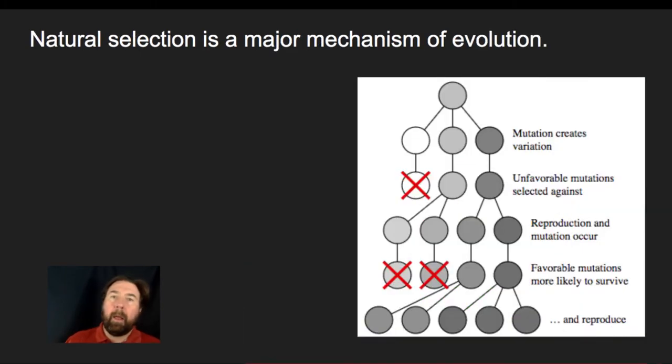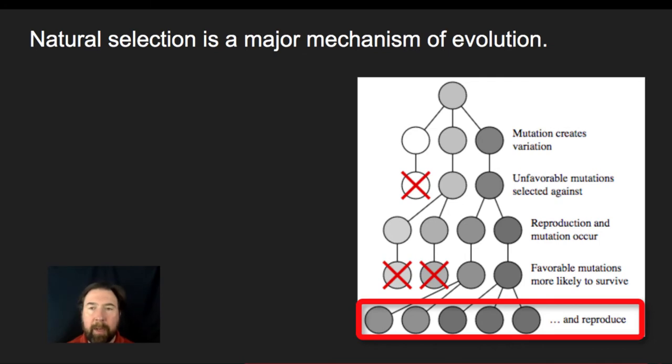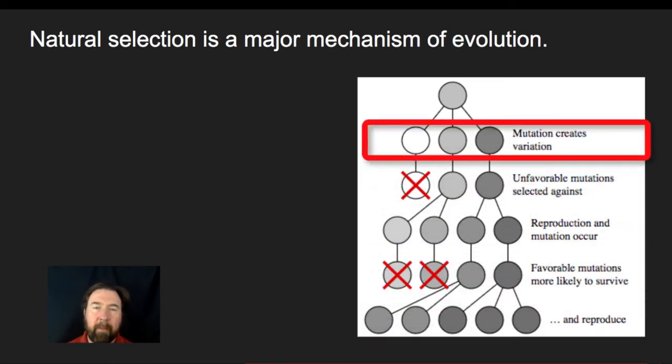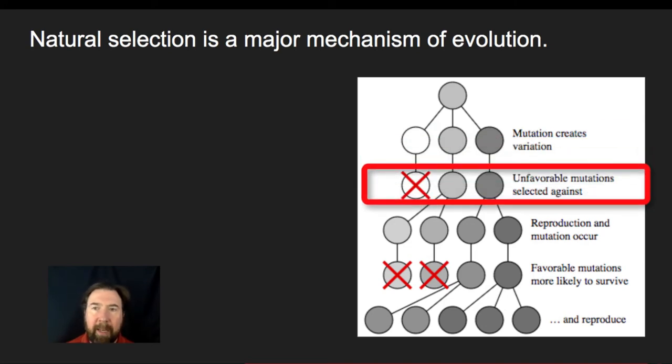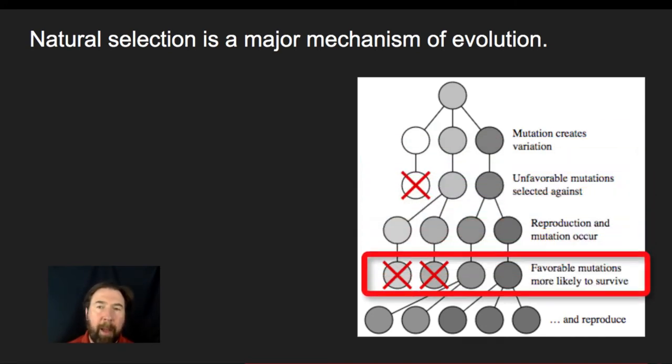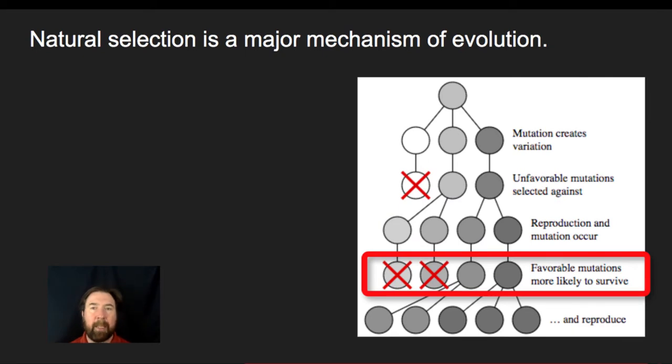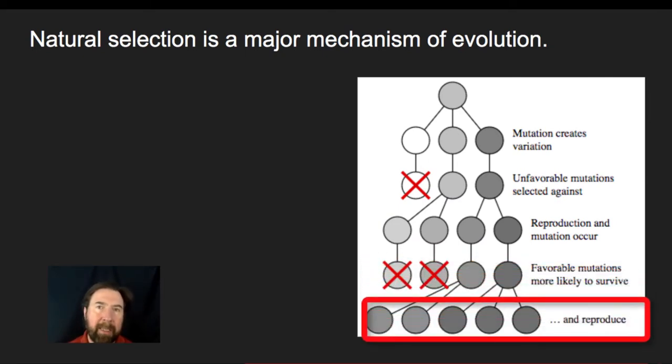When we see natural selection as that major mechanism, we look at how a population changed over time. We notice that modern day versions of any organism have undergone constant tinkering through the variation that existed in ancient populations and the varying degrees of success found in those populations over time as different selective pressure was applied. We look at modern day species as a result of the mechanisms of evolution.